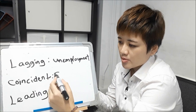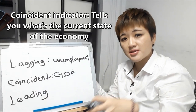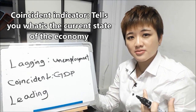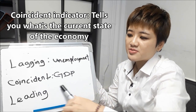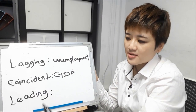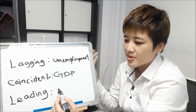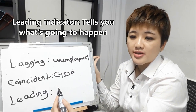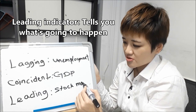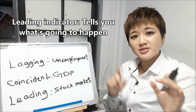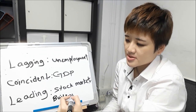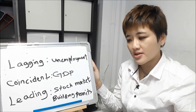A coincident indicator example is GDP — it tells you what the current state of the economy is at this moment, so don't use it to predict the future, but you can use it to confirm past analysis. A leading indicator example is the stock market, which is a leading indicator of the economy. You can also look at yield curves, which are predictors of recessions. Specific to the forex market, you have things like building permits. These terms will be covered in more detail later.